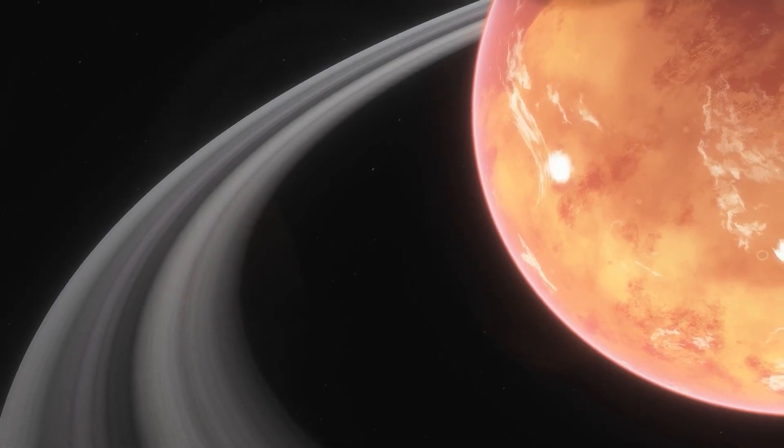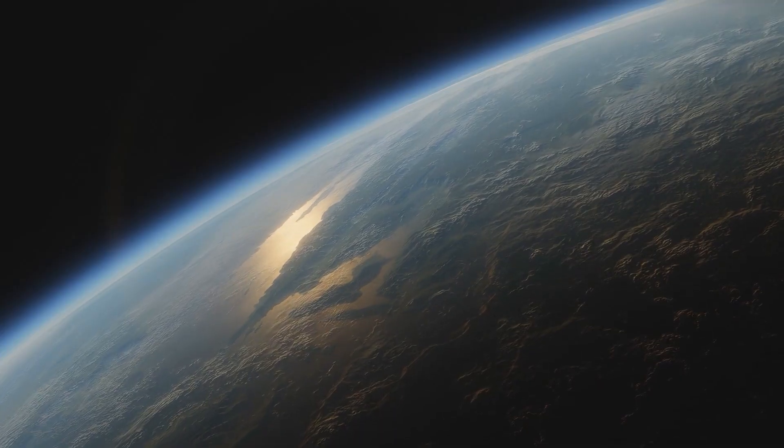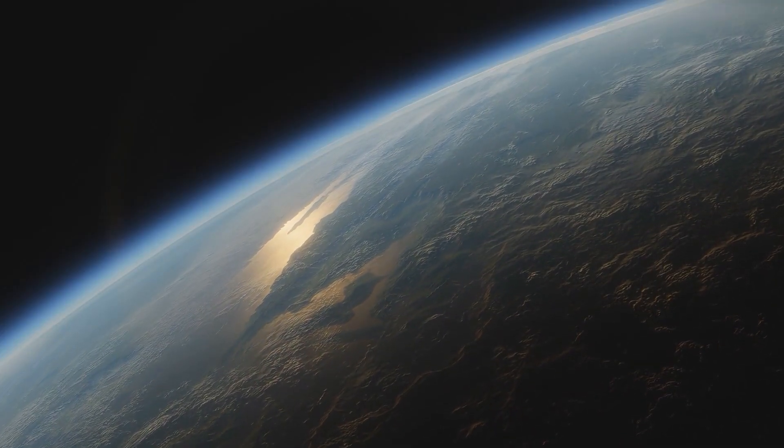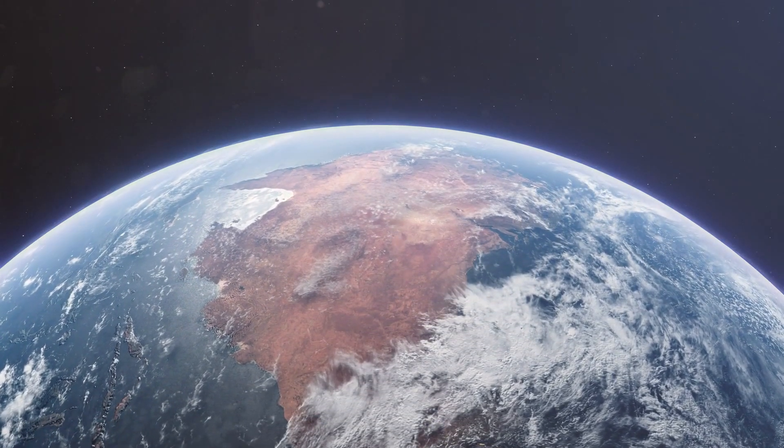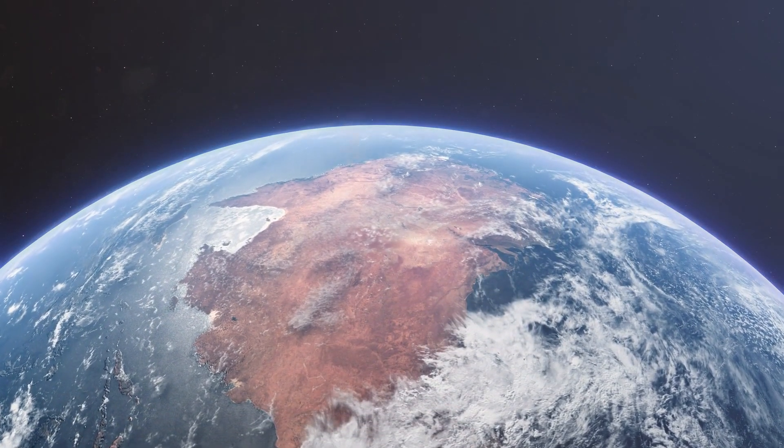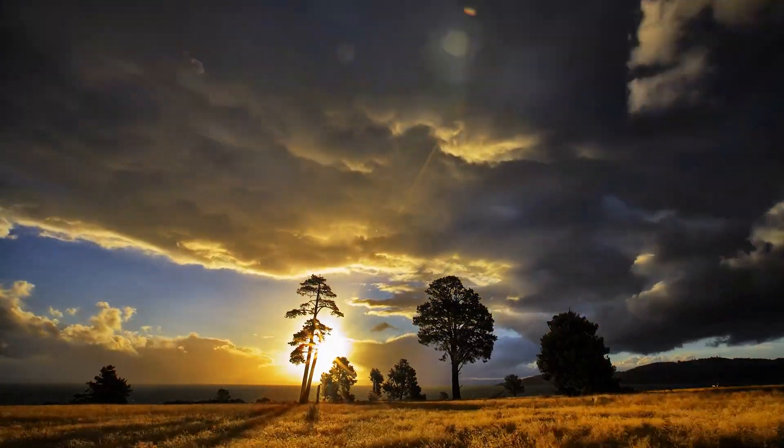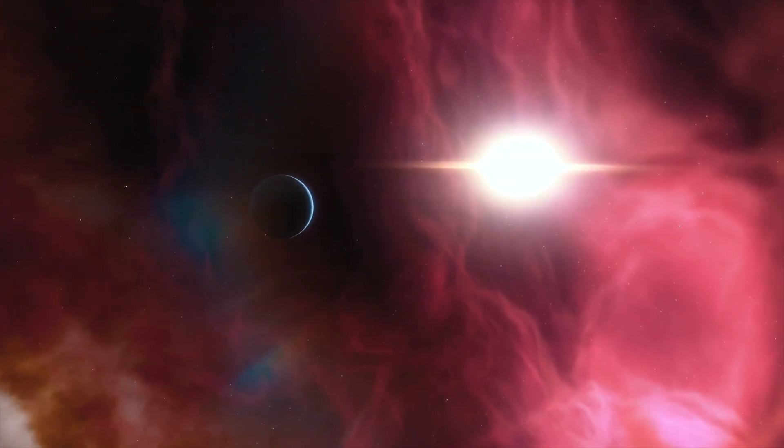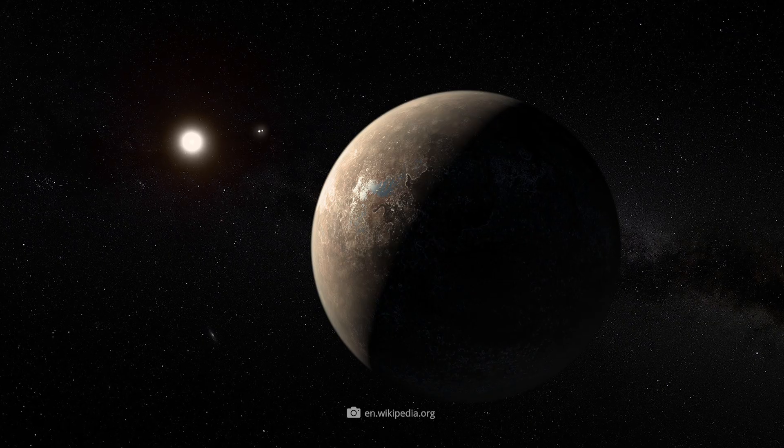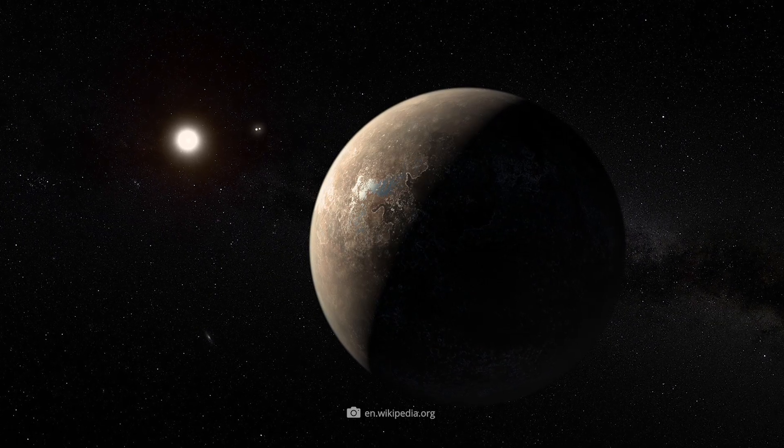The potential habitability of a planet is indicated by the Earth Similarity Index or ESI for short. Since our terrestrial home is the prime example of a life-friendly celestial body, its value on the corresponding scale is 1. Consequently, all extrasolar worlds must be compared to this number. Proxima Centauri b achieves an ESI of 0.87 and ranks fifth on the list of potentially habitable planets.